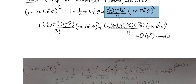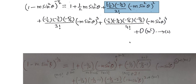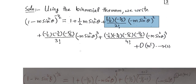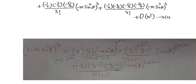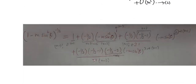Now the question is how to write the general term from this series. When you open and expand the series, you can read off the general term — as we have done in first and second year courses. Let's see: the first term is 1, the second is (−1/2)(−m sin²θ).